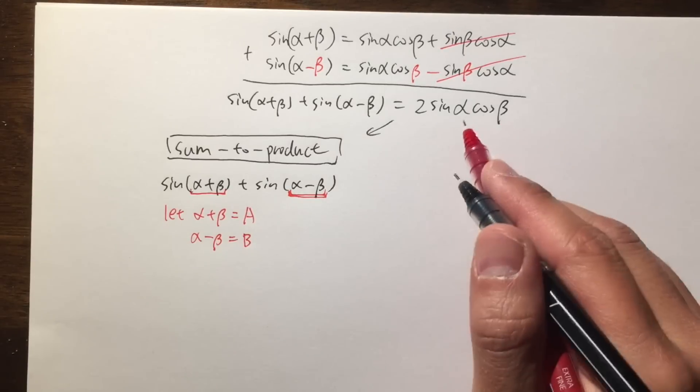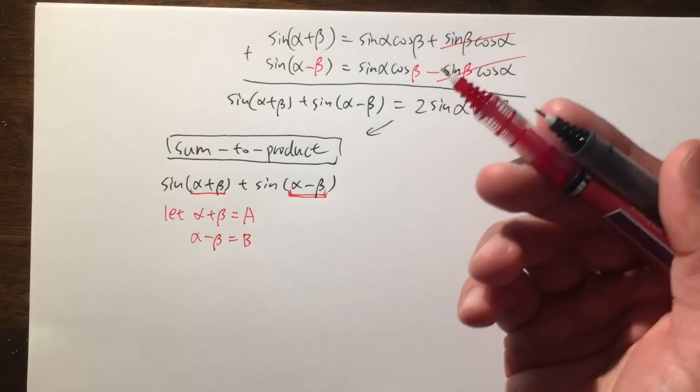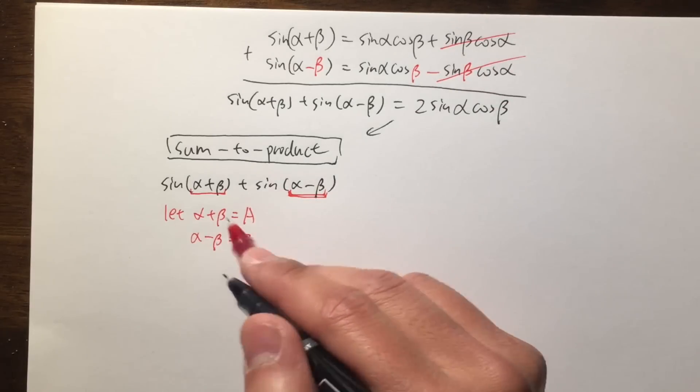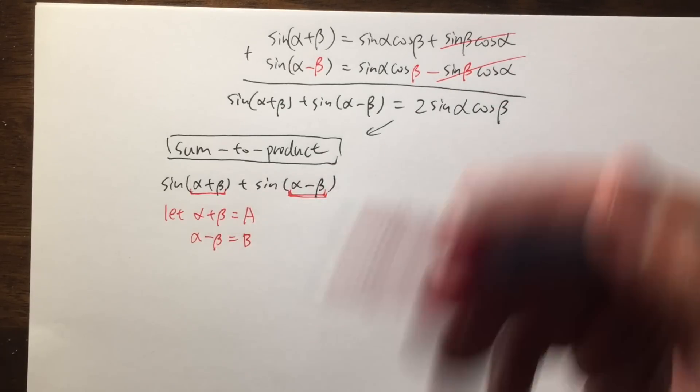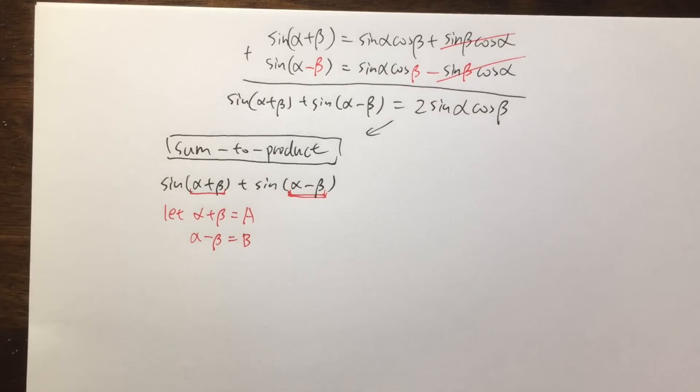So alpha minus beta is equal to capital B. And as you can see, we are pretty much talking about sine A plus sine B, right? Well, on the right-hand side, we have the alpha and beta inside of the sine and cosine. So our goal is, I need to solve for alpha and beta from this right here. Hopefully, alpha and beta will be in terms of A and B. So that we will actually come up with an identity.